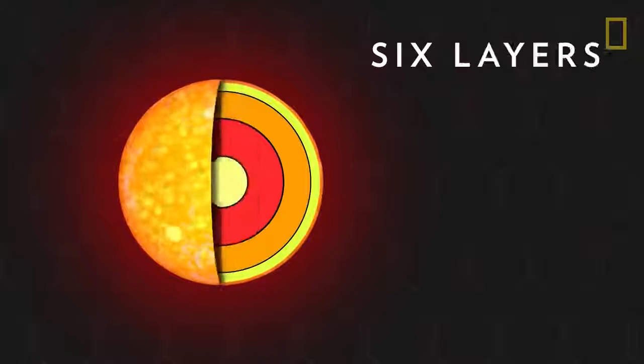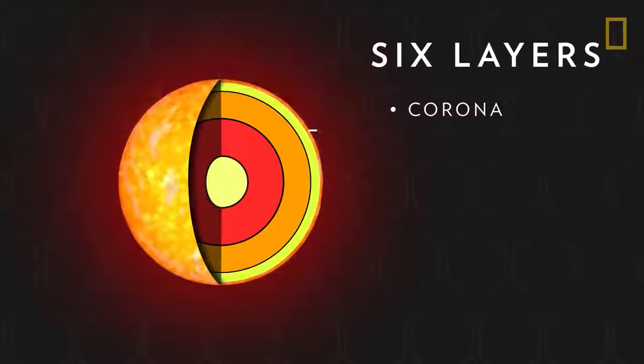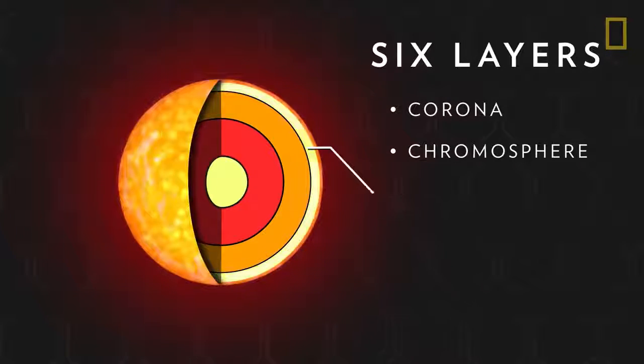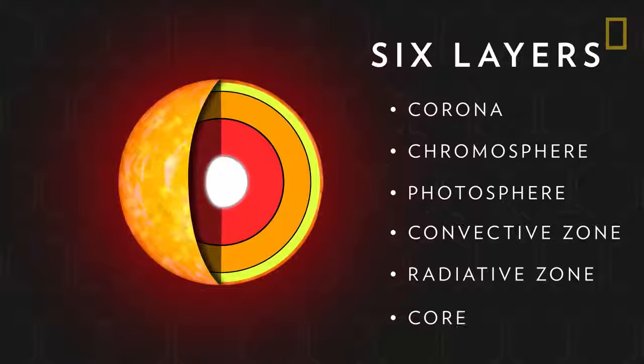The Sun can be divided into six layers or regions: the corona, the chromosphere, the photosphere, the convective and radiative zones, and the core.